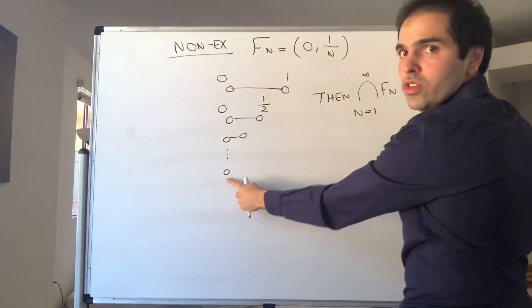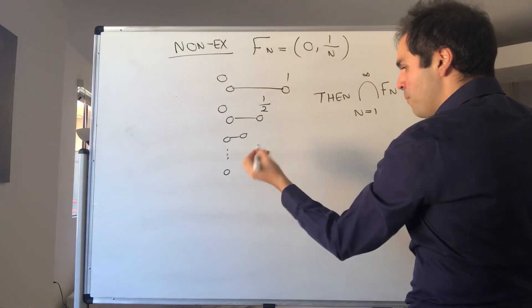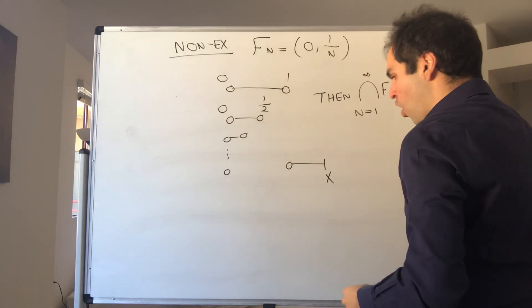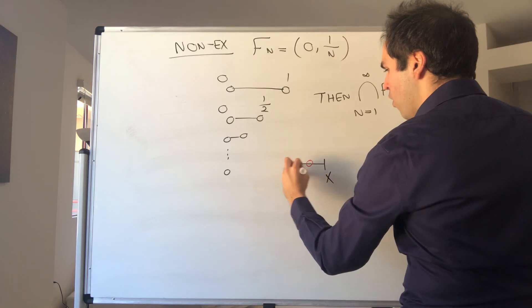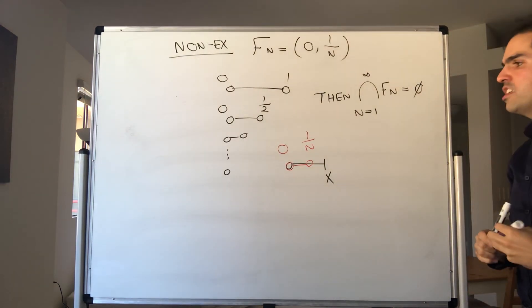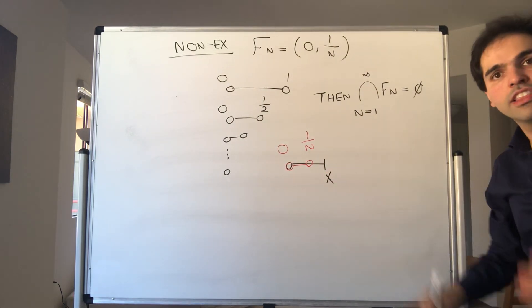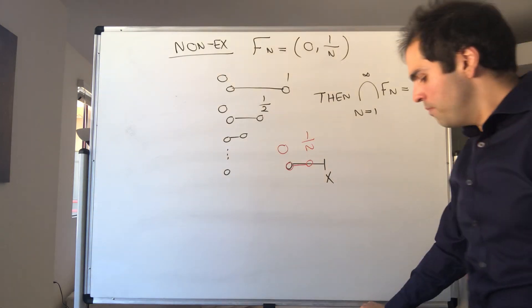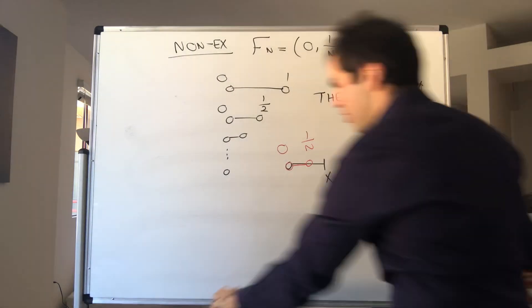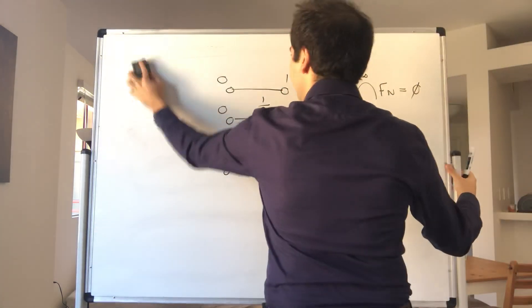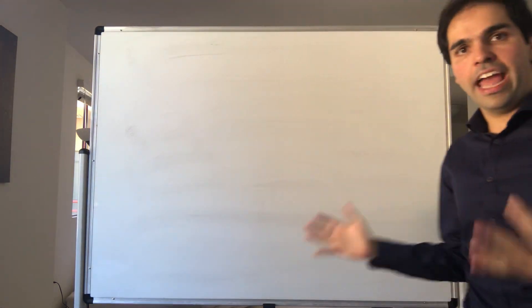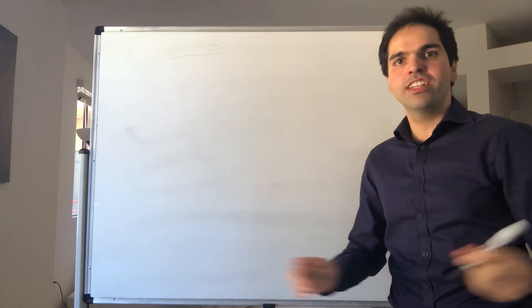The reason is: 0 is not in that set, but also if you have any positive number x, then if you choose n large enough, the interval (0, 1/n) doesn't contain x anymore. So x is outside of the interval (0, 1/n), and in particular the intersection contains nothing. The reason is those intervals are not closed. And I want to emphasize this is a very special feature of RK — it is not necessarily true in other metric spaces. So we have to use a tool that works only for RK.